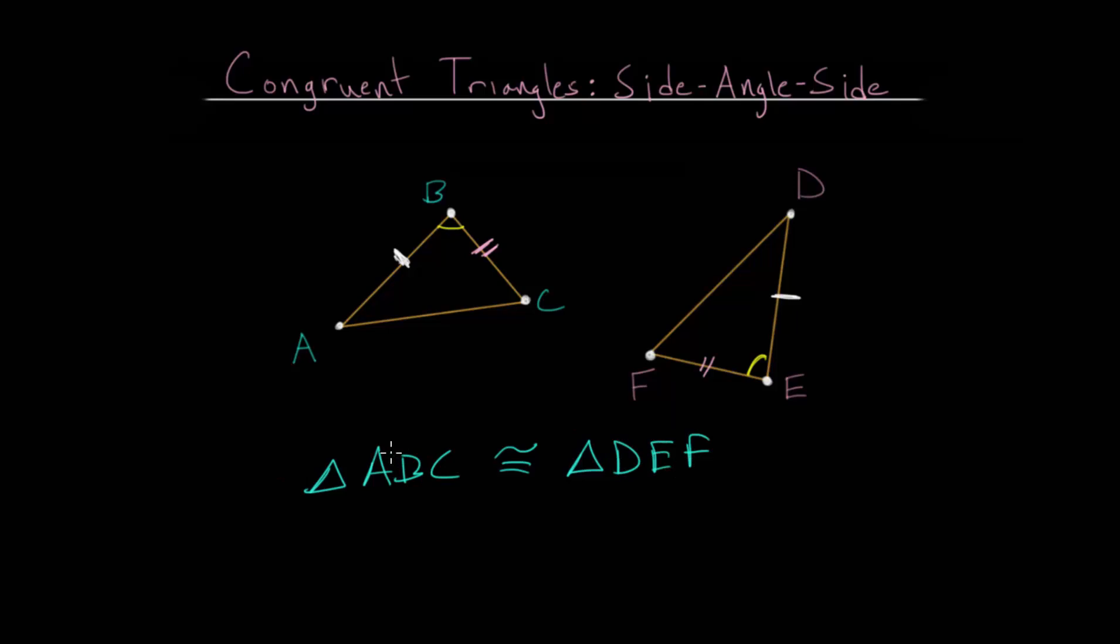And again, remember that the order in which you write these is important since it corresponds to the side lengths that are equal. So AB and DE, those are written first since they are equal to each other. So if we have this congruence relationship, that you have this side-angle-side, then you know for sure that the two triangles are the same size and the same shape.